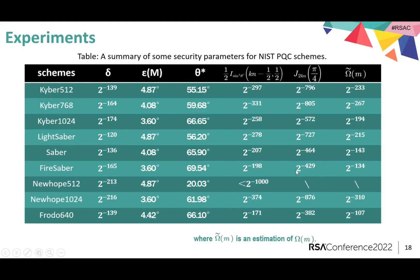In the first table, we gave a summary of some security parameters for these four schemes including delta, the failure probability, epsilon_m, the maximum difference between the angles among queries and pi over 2, theta star, the angle that an attacker can obtain, 1/2 times I, the proportion of key candidates in each cap, J_{2kn}(pi/4), a quantity characterizing the overlaps, and omega_{2}(m), an estimation of omega(m).